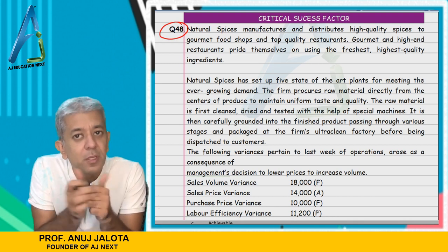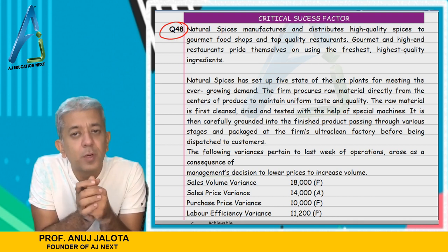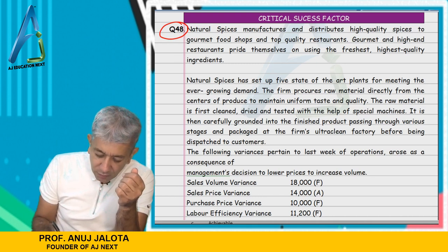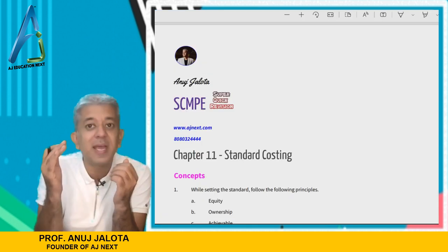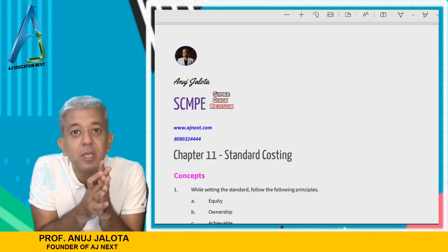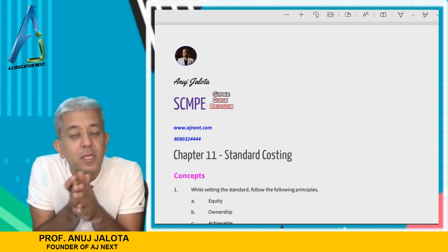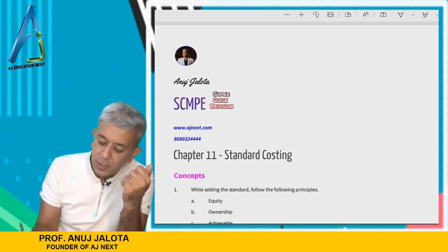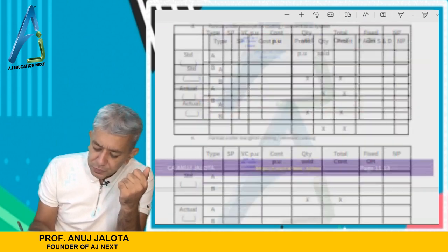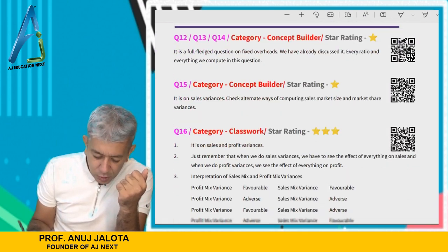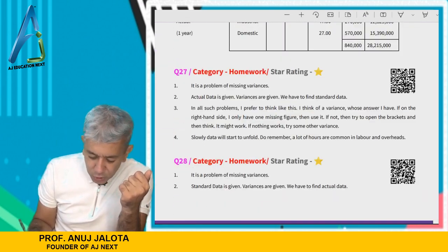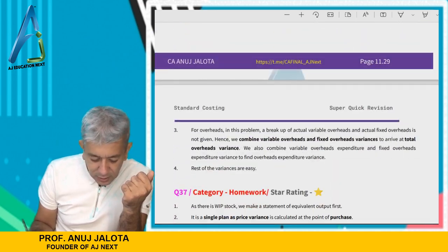Open your super quick revision book. In your super quick revision book you will have a summary of all the questions that are being done. Scroll down, turn the pages and reach that particular question — in this case, question number 48.